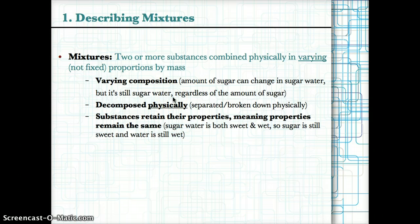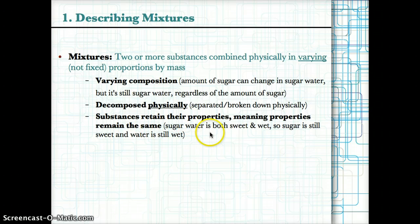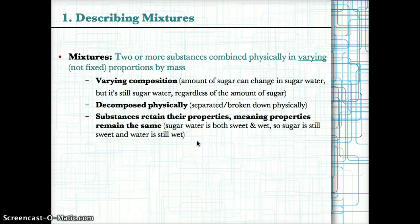So if it's 5 grams of sugar in 100 grams of water or 10 grams of sugar in 100 grams of water, it's still sugar water. Because mixtures are formed by physically combining substances, they can also be decomposed or broken down physically as well. Finally, each substance retains its own properties — meaning the properties stay the same. For example, sugar water is both sweet and wet, so sugar stays sweet and water remains wet. The fact that they're combined physically doesn't change what their properties are.